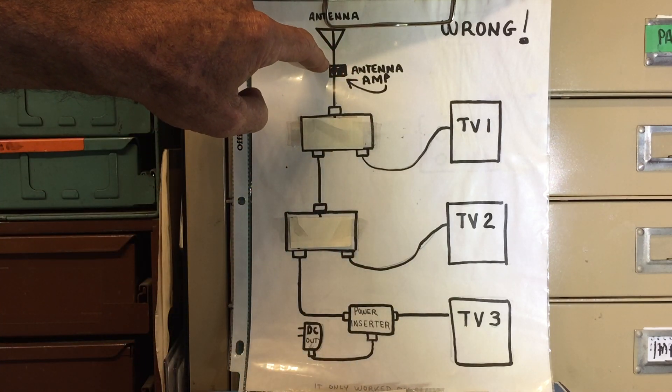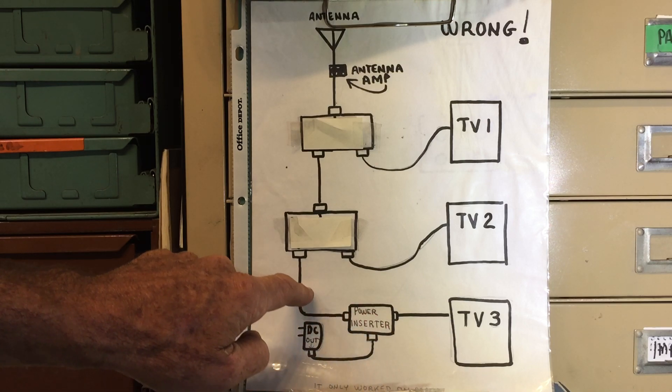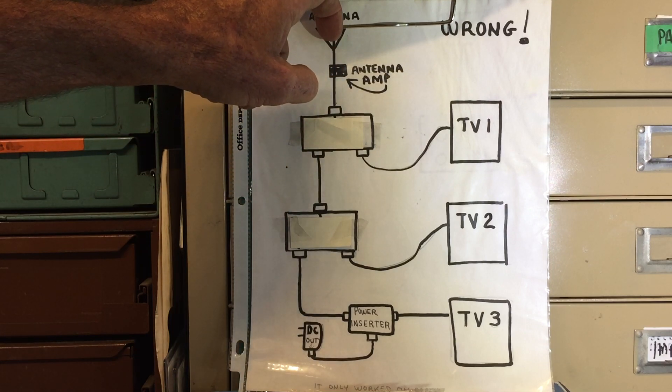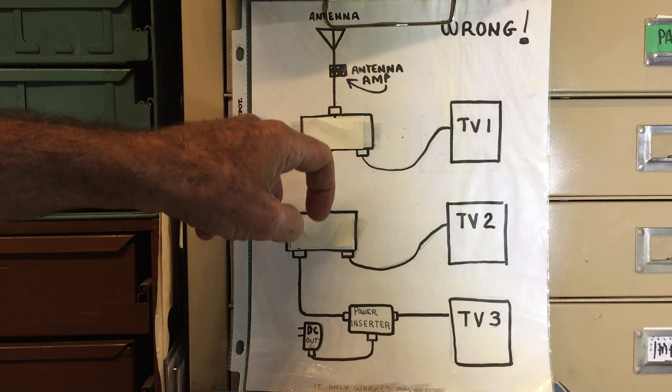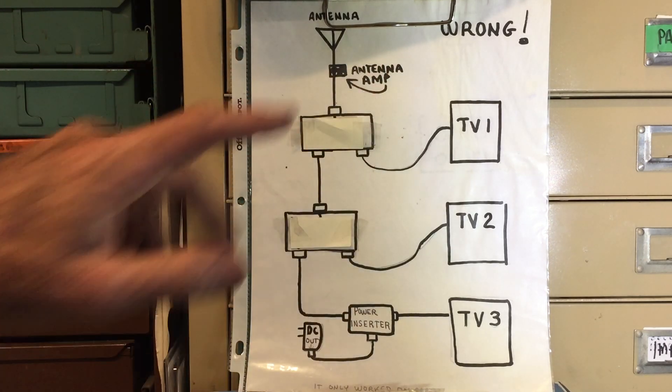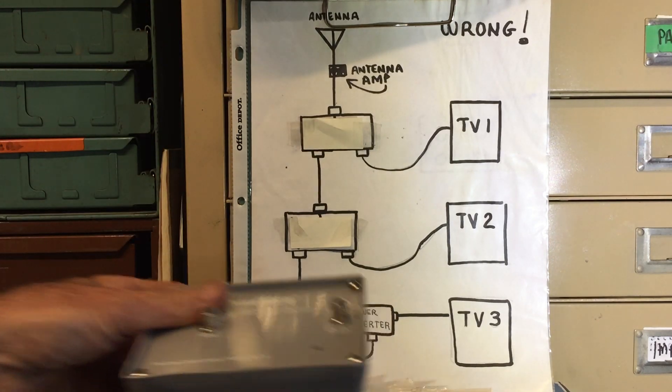They do need power, the antenna amplifier needs power, so you have a device called a power inserter that's plugged into your house and it sends power this way up to the antenna amplifier. Then the signal from the amplifier is sent back down this way. Actually, they're generally called preamplifiers, I keep calling it an amplifier.